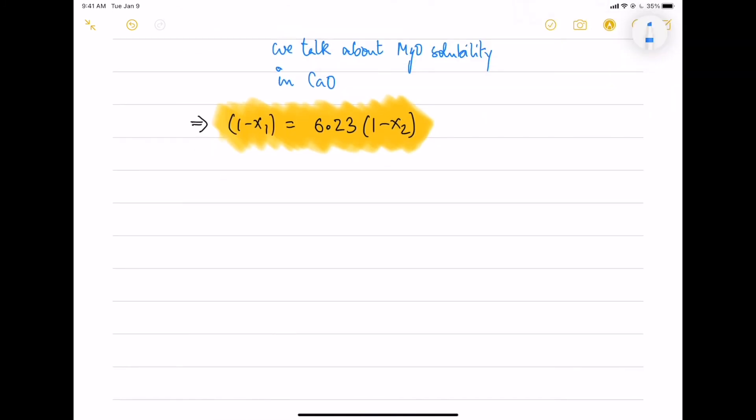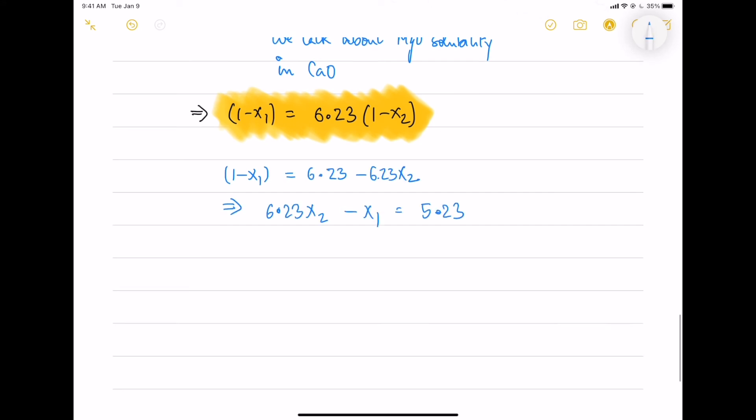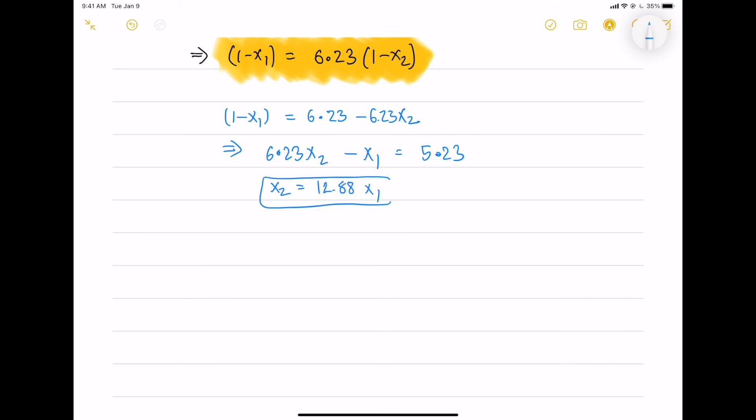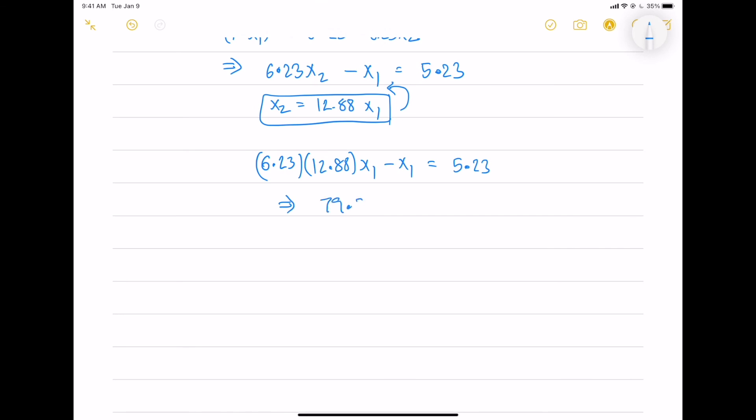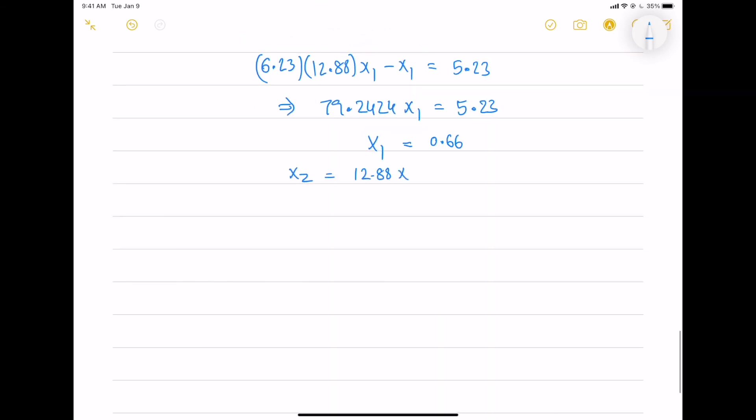So we will use these two equations to solve X1 and X2. X1 we obtain as 0.066 and X2 as 0.85. So here X1 is not 0.66, it's 0.066. Please note that.